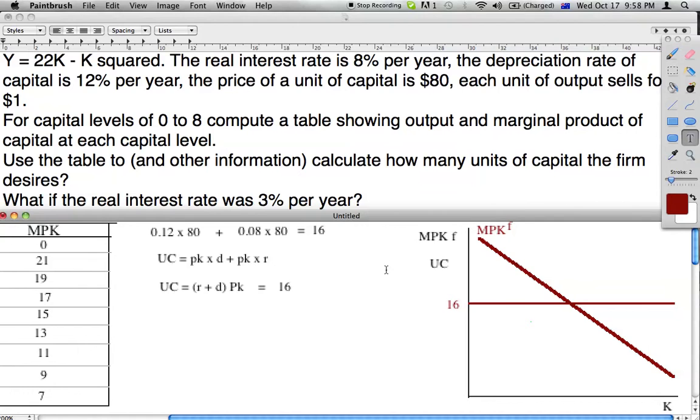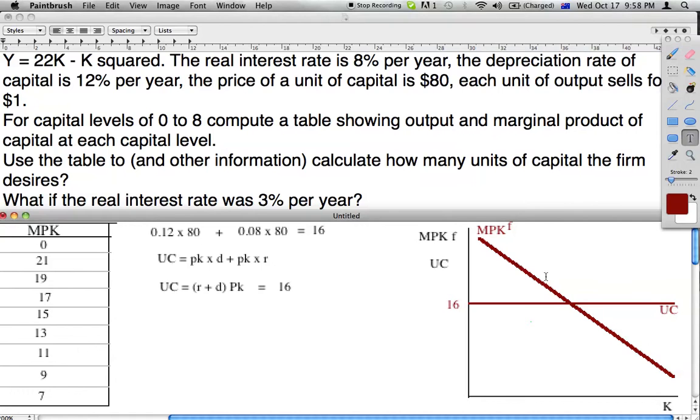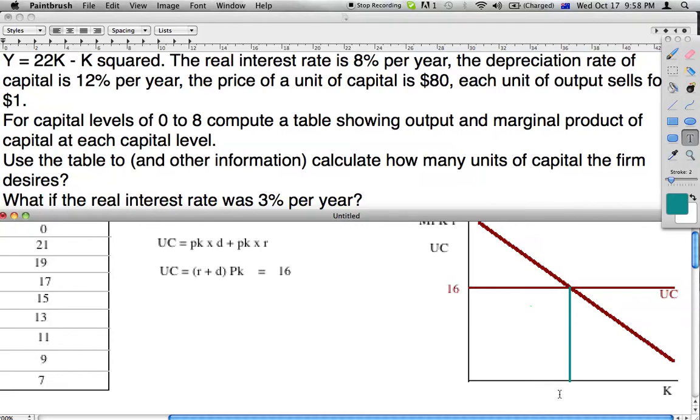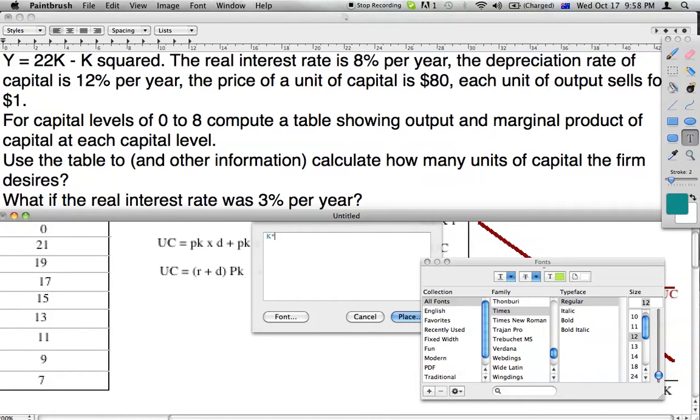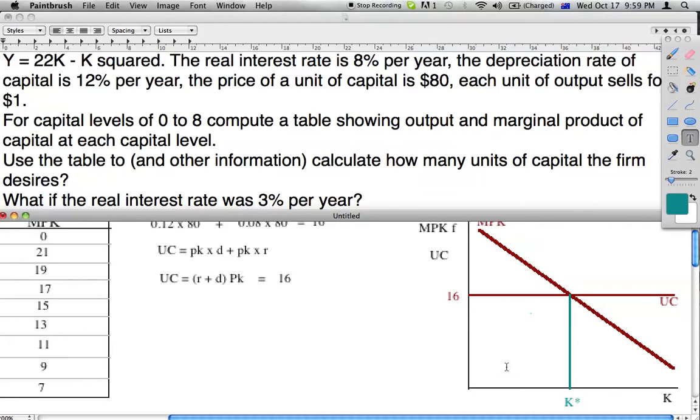How much are they going to want to hire? They're going to hire where the user cost of capital equals the marginal productivity of capital, the benefits of having that capital. We can draw this on the graph at this point here, and this is how much capital is desired, labeled K star. Because if you have more capital than K star, your user cost will be greater than the marginal benefit, resulting in a decrease in profit.